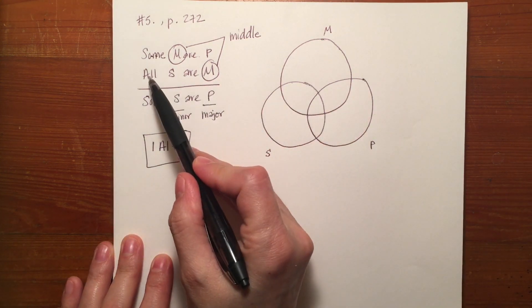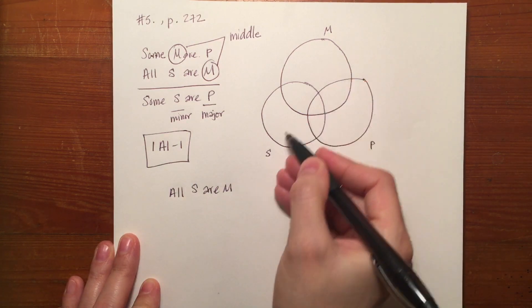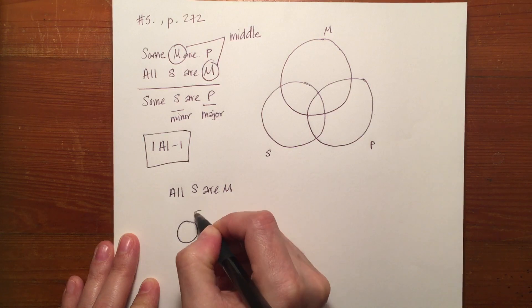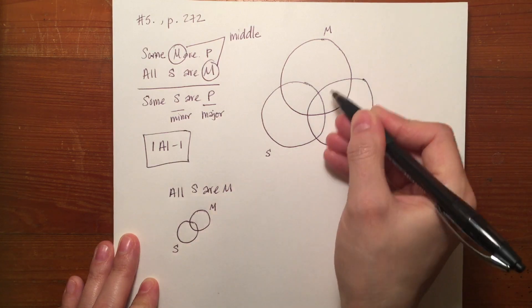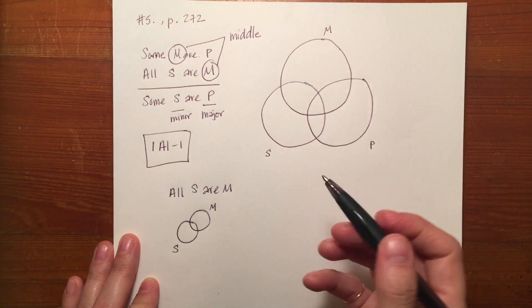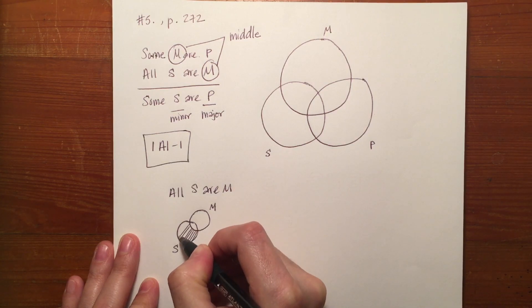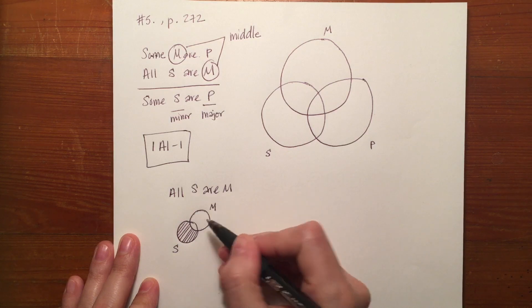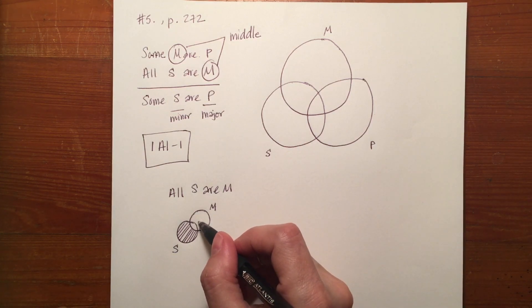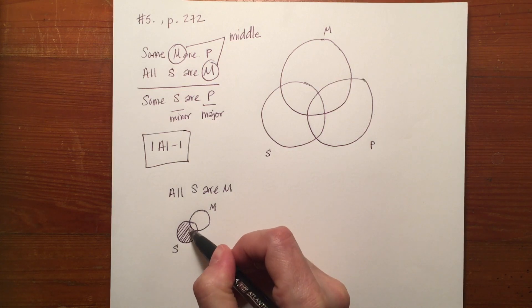So if we look at the universal premise All S are M, we can take from this larger diagram and just on the side make a note to say what would it look like if it was just those two circles that we were focusing on, because that's what it will be when we put the information into the larger diagram. So if we say All S are M we're going to want to shade out all the parts of S that don't overlap with M to show that all the blank spaces are what we're concerned with. That where S and M overlap inside of this i, so to speak, those are the S's that we're concerned about, not all of these other S's that we've shaded out.